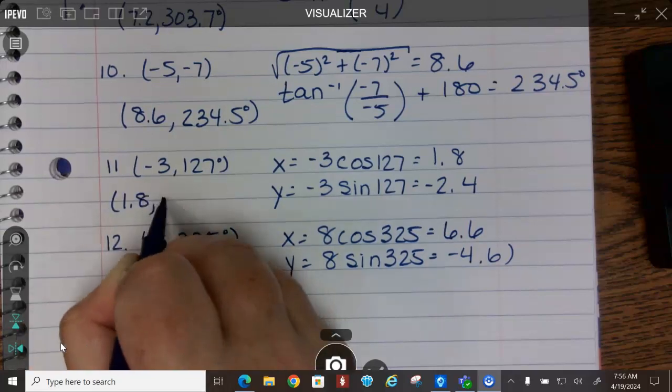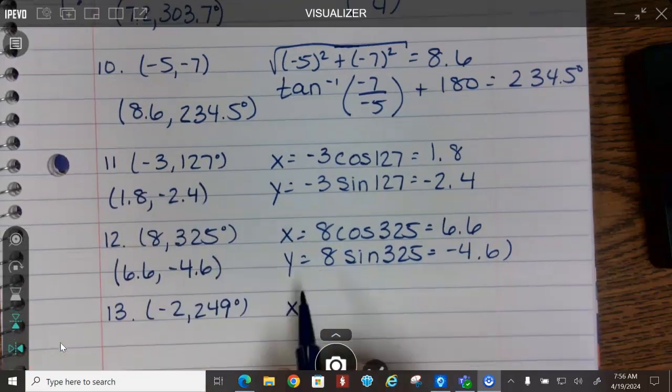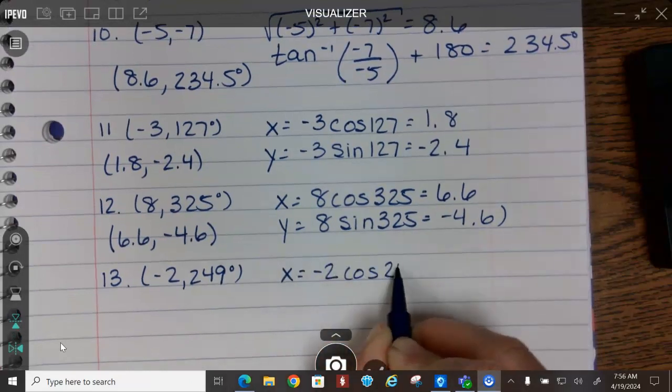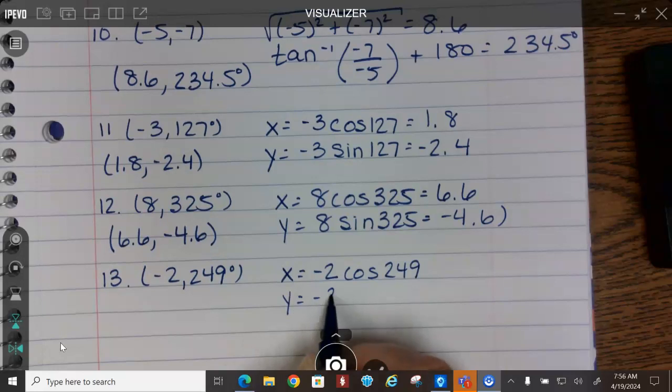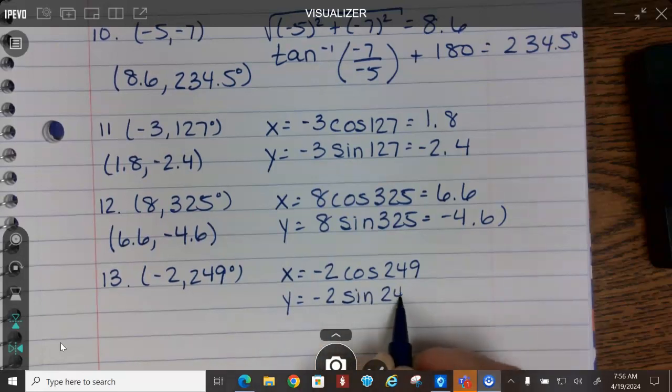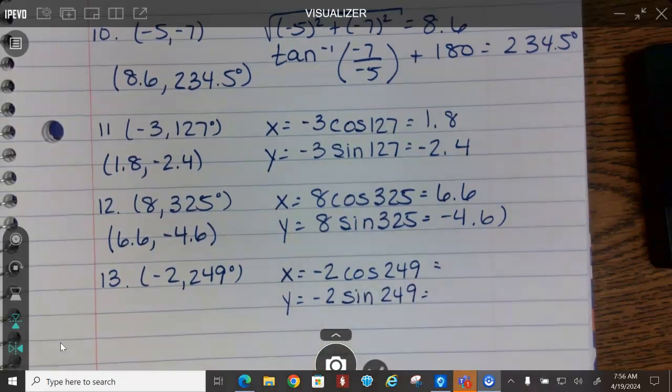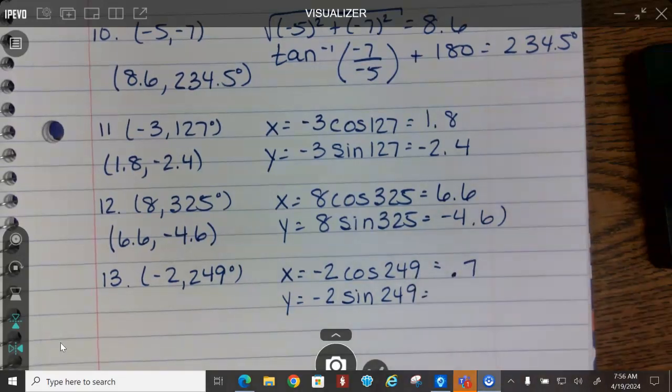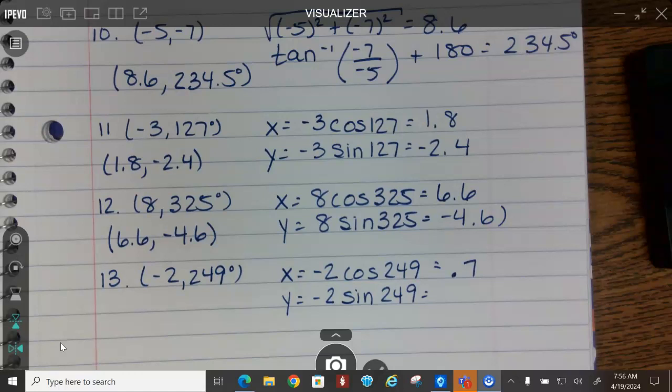And then x equals negative 2 cosine of 249, y equals negative 2 sine of 249. Negative 2 cosine 249 equals 0.7. Oops, I hit the wrong button.